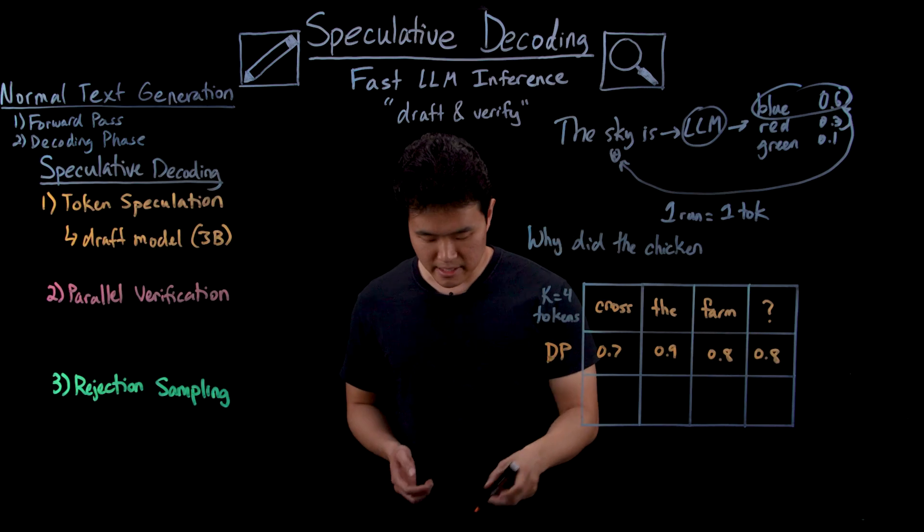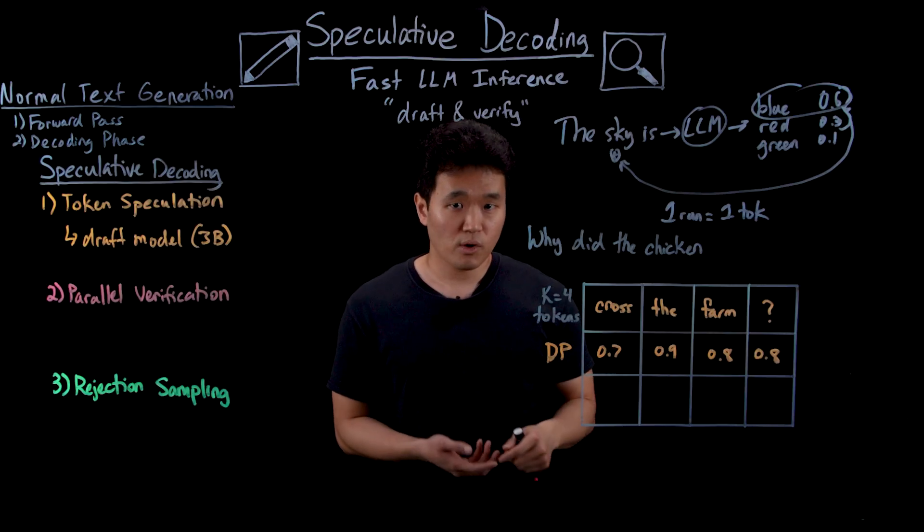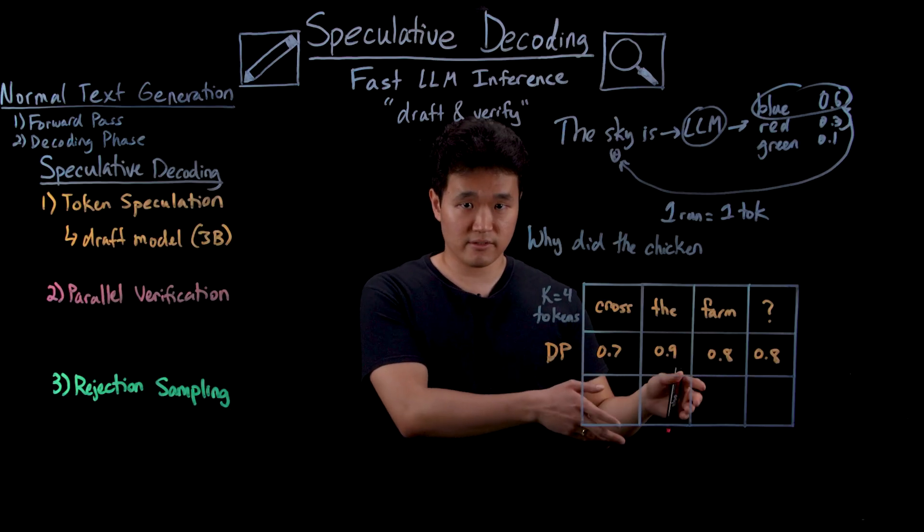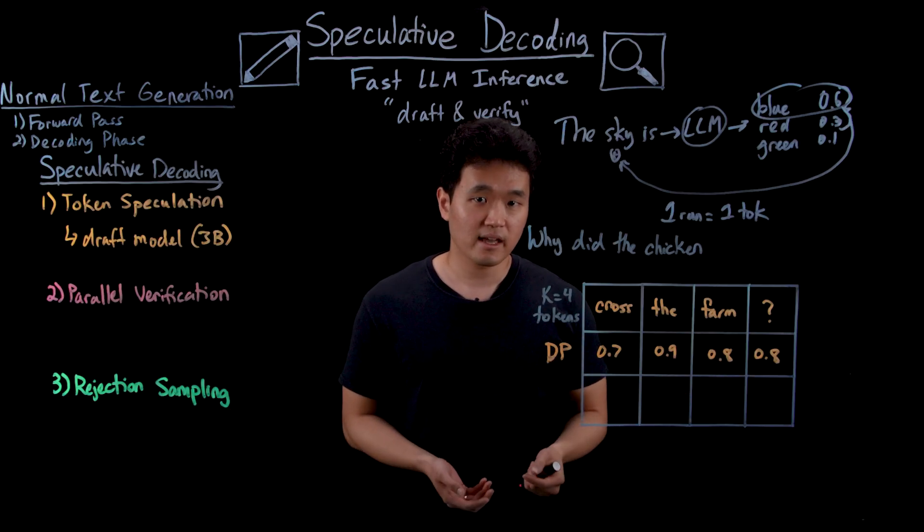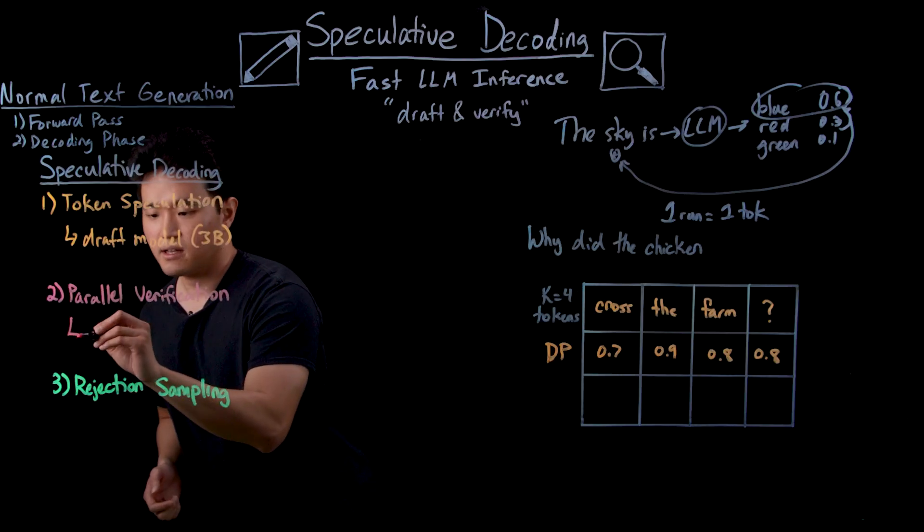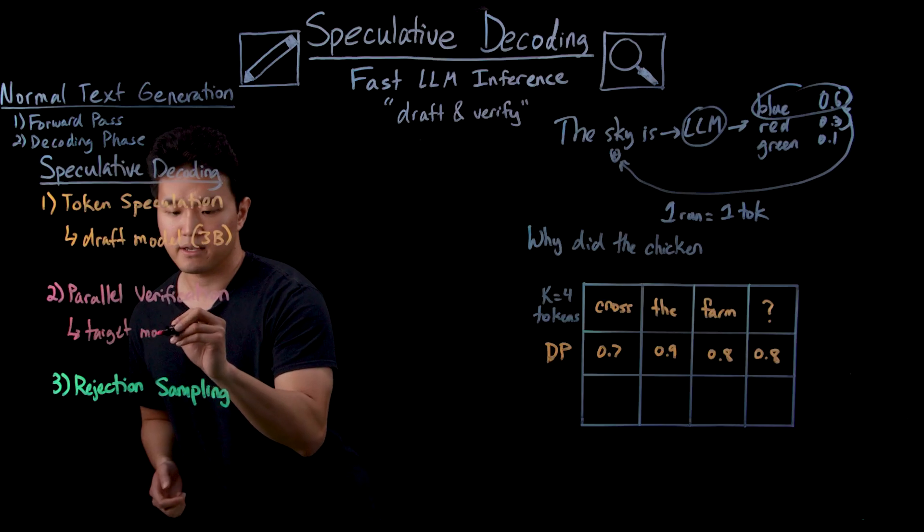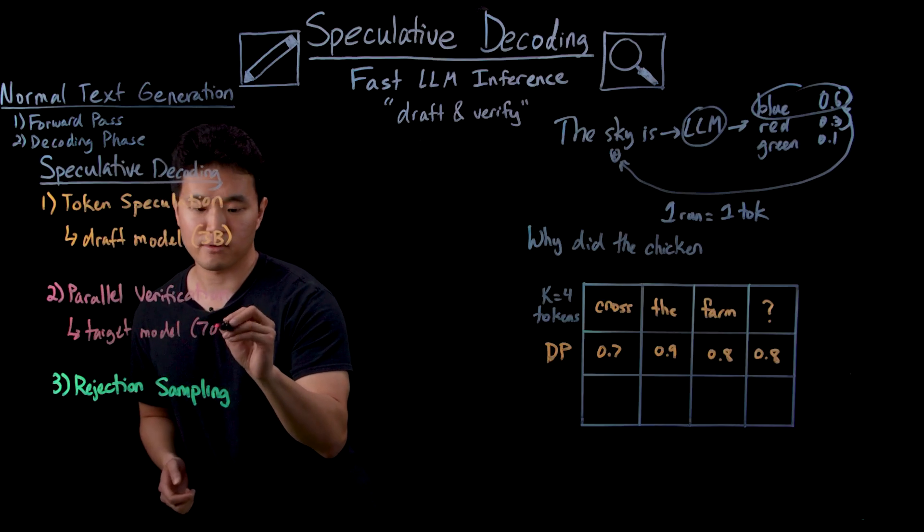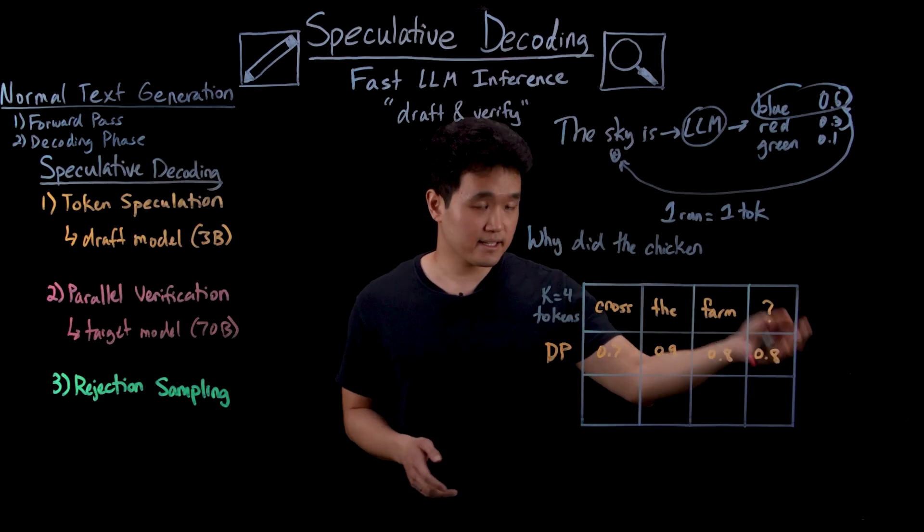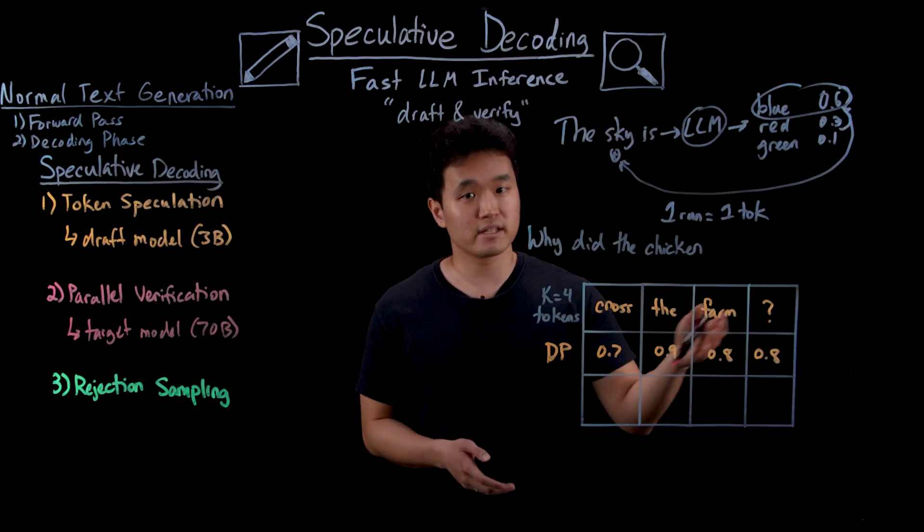Next, during parallel verification, we concurrently check the draft model's output. We do this by making an assumption that all the speculated tokens from the draft model are indeed correct, and then pass this modified input into a larger target model, say for example 70 billion parameters, in order to get a prediction of what the next single token is as well as the target model's confidence for the draft model's guesses.